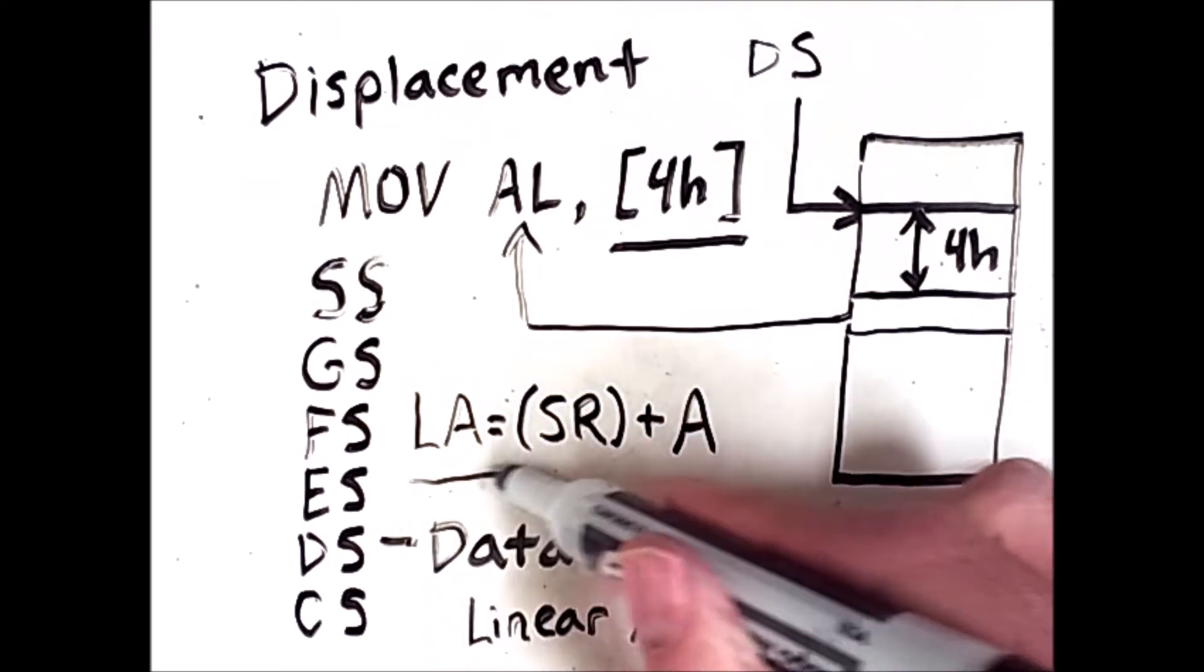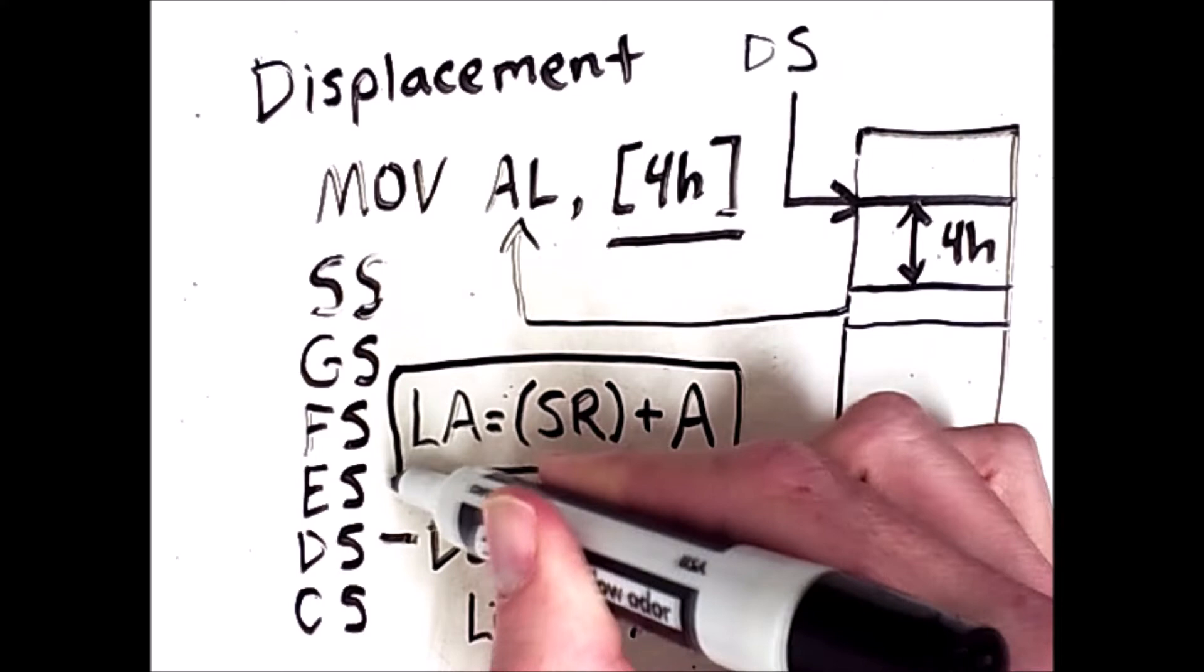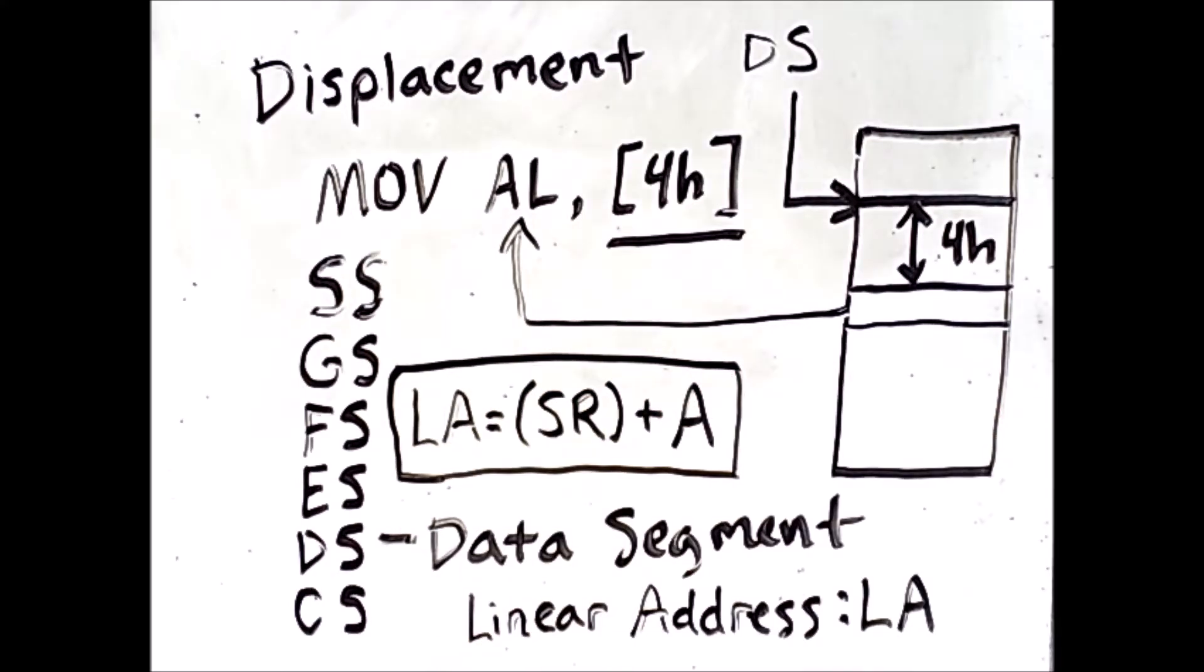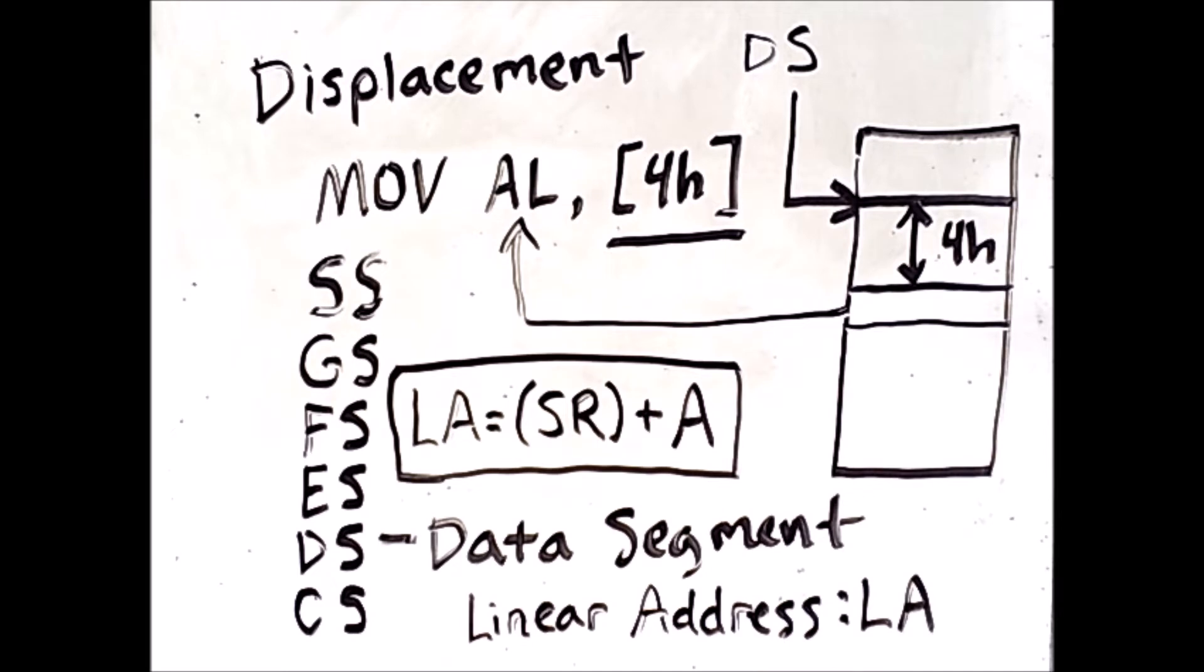So this is what displacement by itself means for x86. One final note about displacement is that some sources may actually refer to this as direct addressing. However, because we are actually offsetting from a segment register value, even though that segment register is implicit in this operation, it is still displacement and not direct addressing.